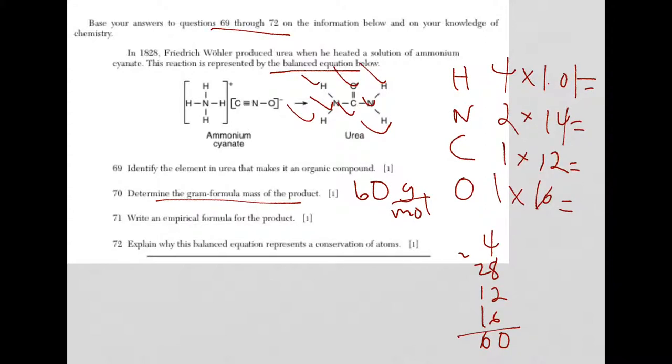Question 71 is asking about writing an empirical formula for the product. The formula for urea is CH4NO. An empirical formula means that it's the lowest whole number ratio. One carbon, four hydrogen, one nitrogen, and one oxygen is the lowest whole number ratio. So there's your answer. It does not matter what order you put the elements.